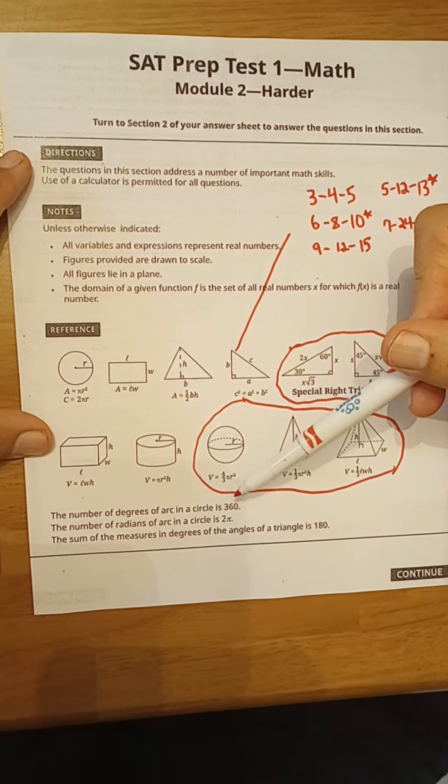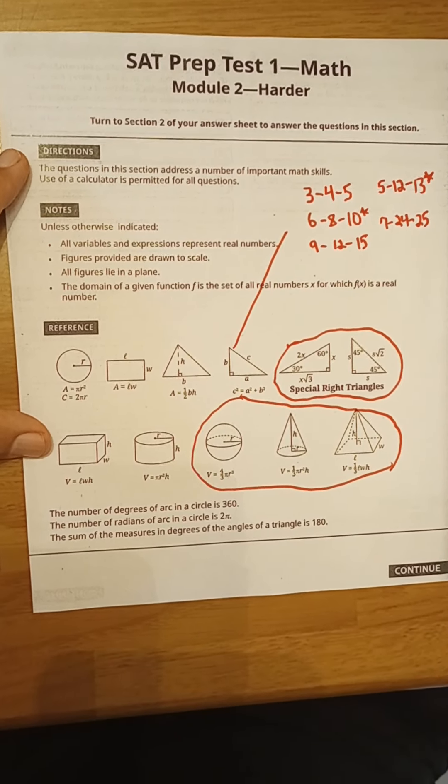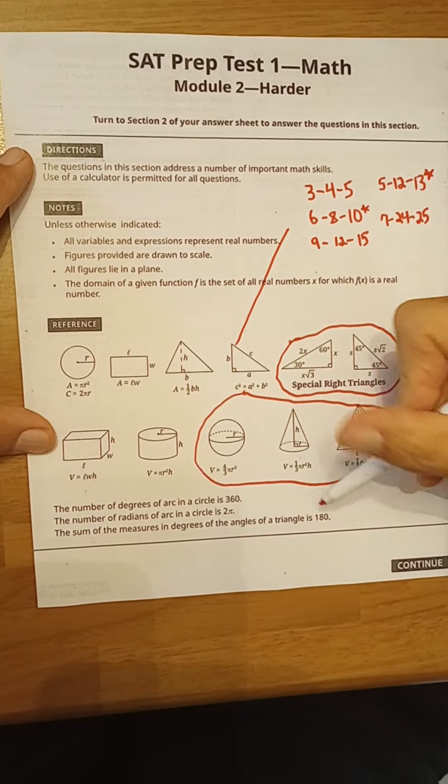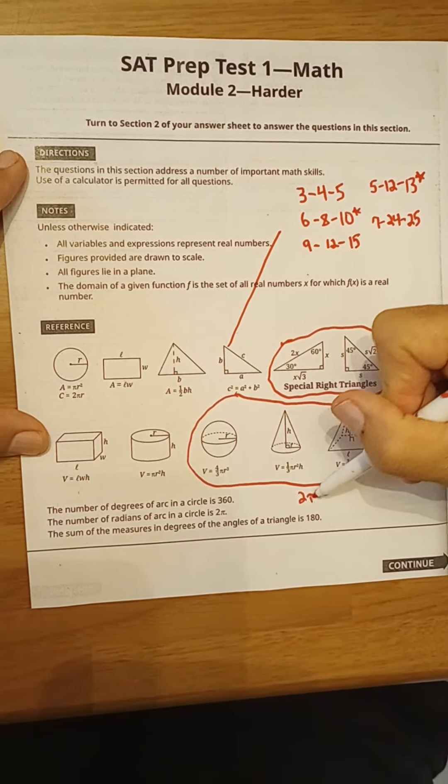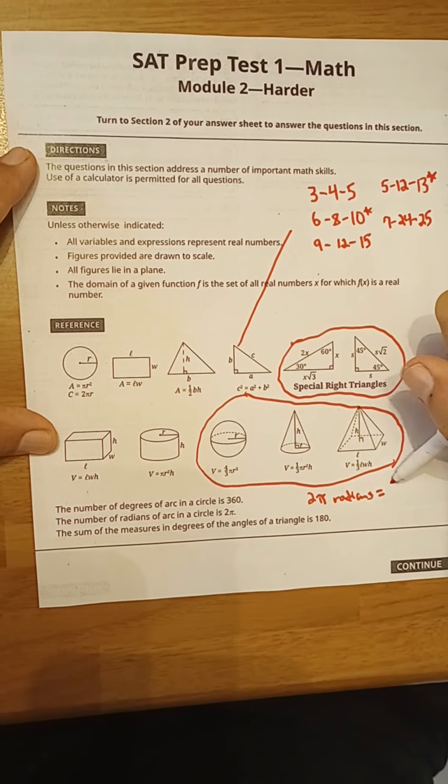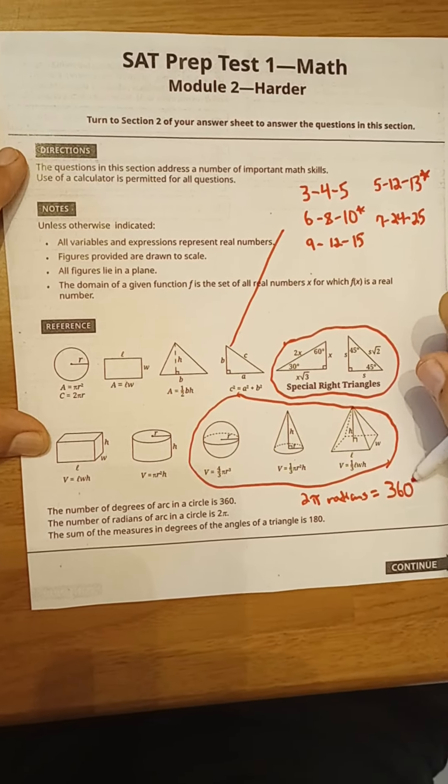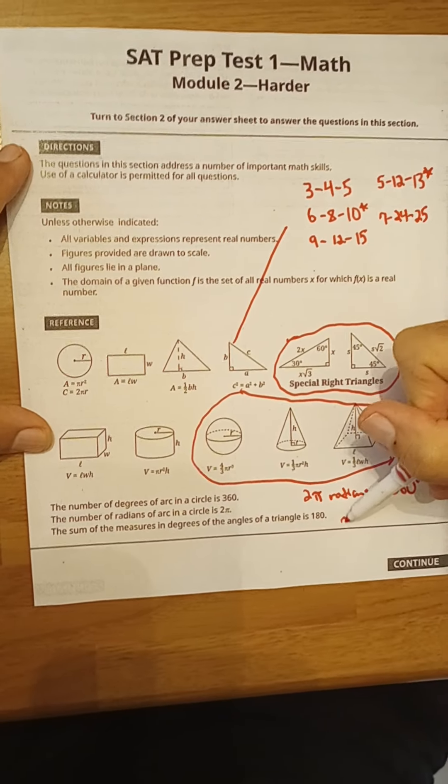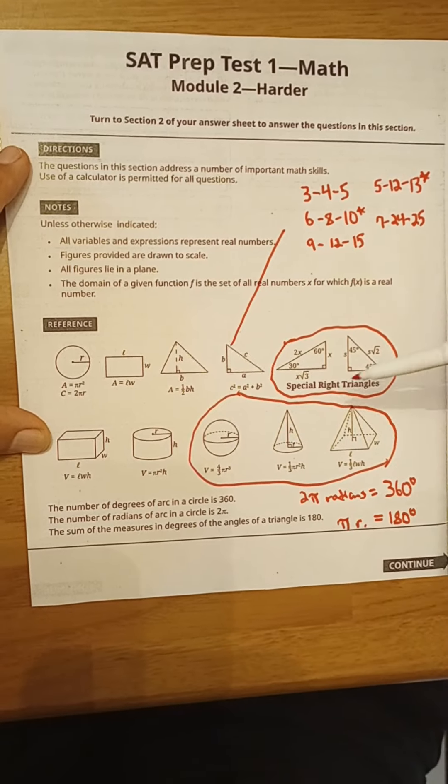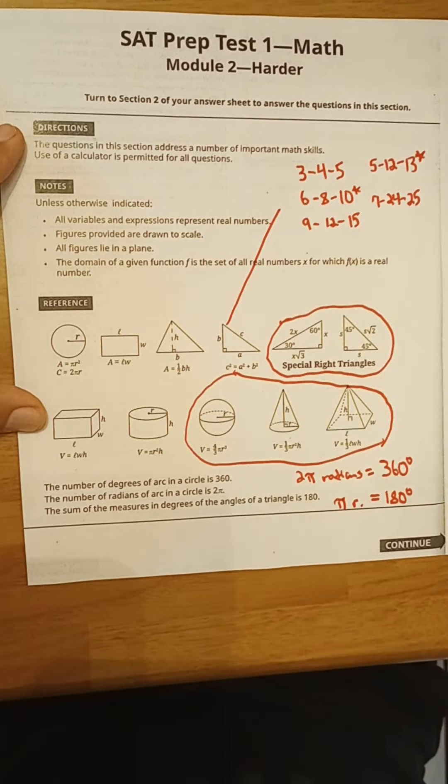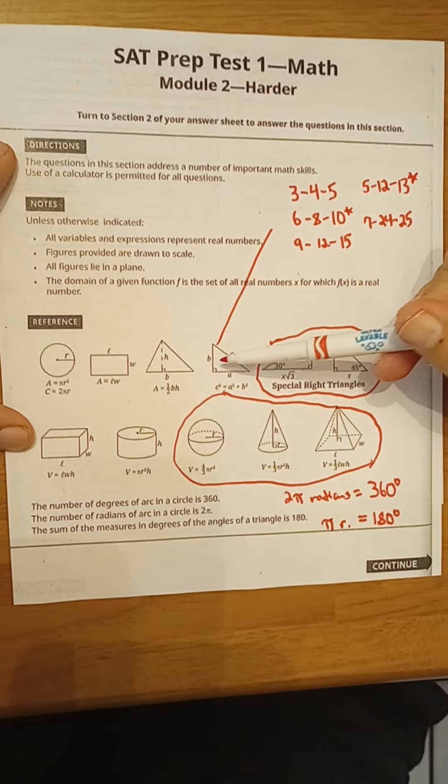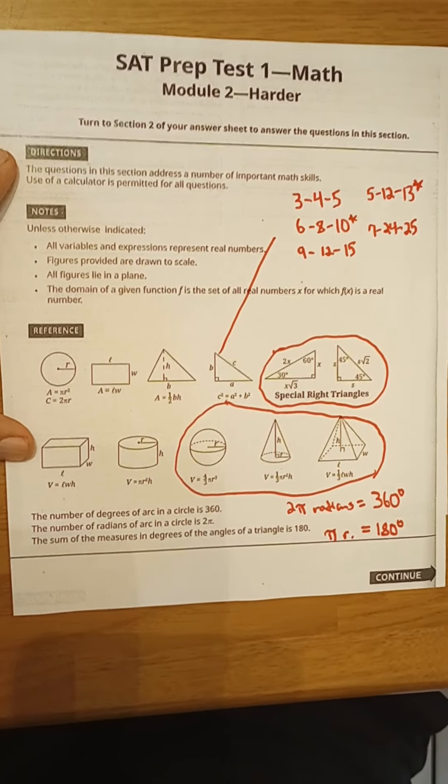The number of degrees of arc in a circle is 360. The number of radians of arc in a circle is 2 pi. So 2 pi radians would equal 360 degrees. That does come up. And pi radians is simply 180 degrees. The sum of the measures in degrees of the angles of a triangle is 180, so the interior angles add up to 180.